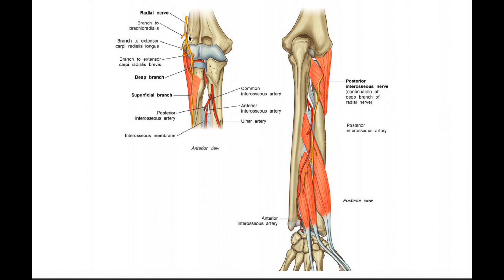Here we've peeled off that muscle, so all we see is the supinator. We can follow the superficial radial nerve all the way down the forearm. It's pretty much just going to be running underneath brachioradialis the entire time.